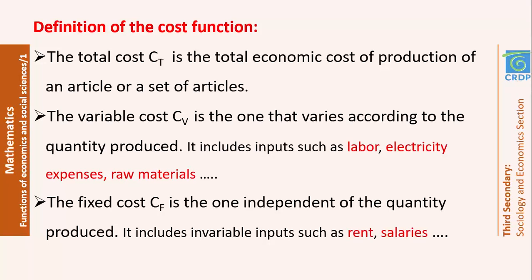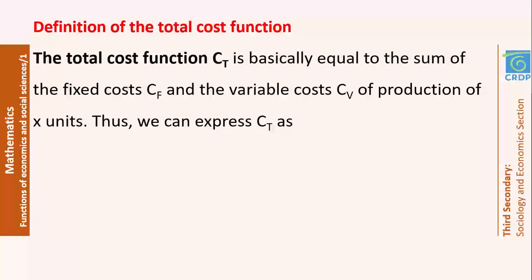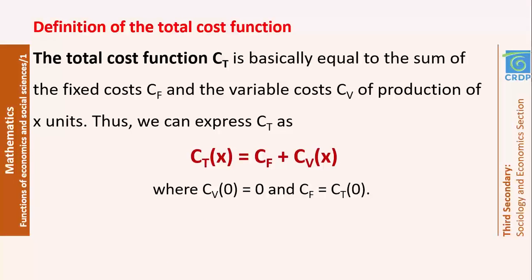And we have the fixed cost, which is independent of the quantity produced, such as the rent. If a factory is paying for rent, they will need to pay even if they are not producing any items, so the rent is independent of the quantity produced. The total cost function will be equal to the sum of these two types of costs: Ct(x) = Cf + Cv(x). The fixed cost Cf is independent of x since it doesn't vary when the quantity varies — it's a constant.